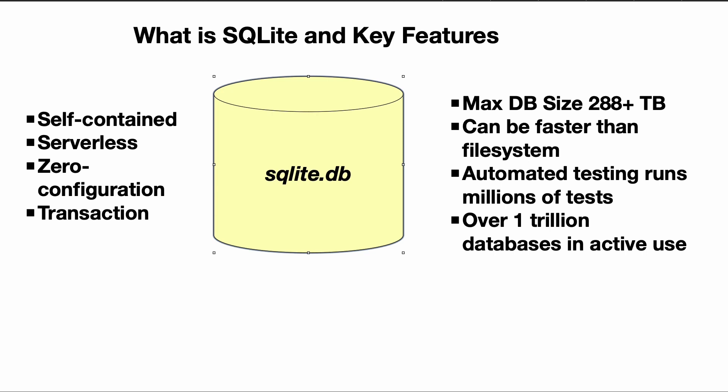SQLite supports transactions, so this means that you can do atomic commit and rollback. This allows for safe concurrent access by multiple processes or threads. It also can scale up to 288 plus terabytes, which is just amazing. The limits on the database size are basically non-existent for most practical purposes.